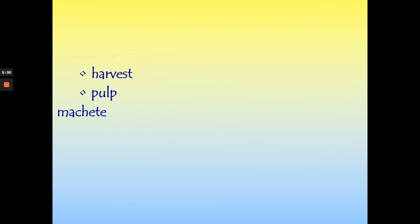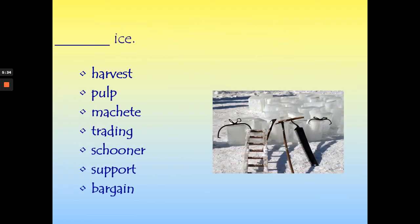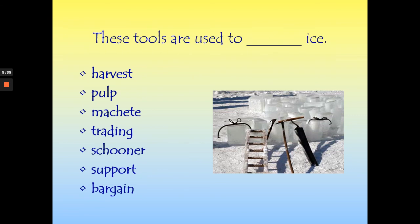All of our words again. Which one would go in our new sentence: 'These tools are used to blank the ice'? In our story, they're going to collect the ice — and that is to harvest. They're collecting or gathering those goods.